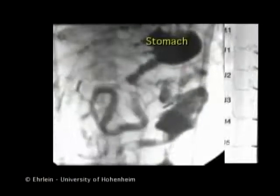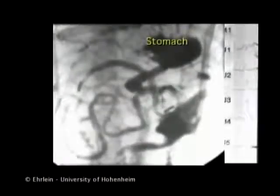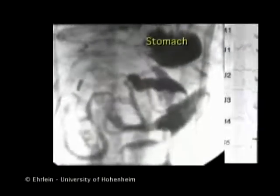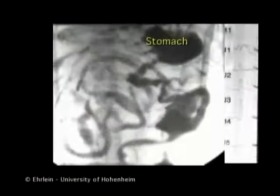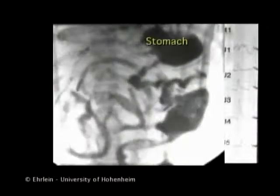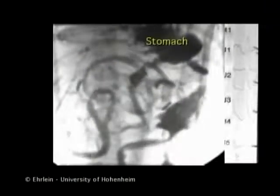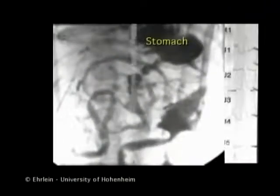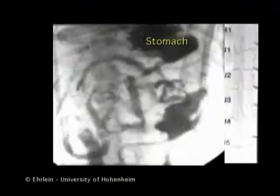Here you see rapid peristaltic and antiperistaltic waves in the fasted state after Billroth II gastrectomy. These move extremely rapidly over long distances of the small intestine.